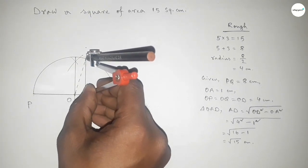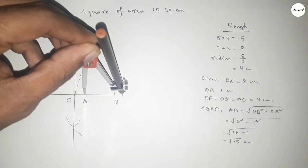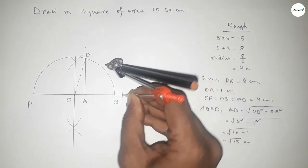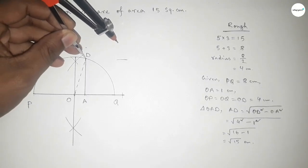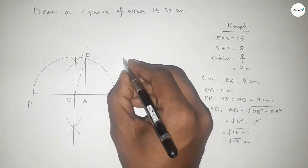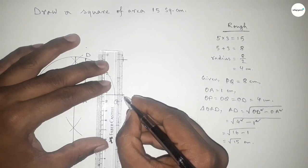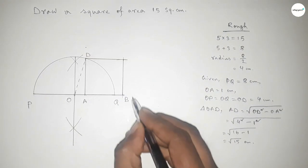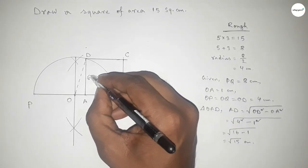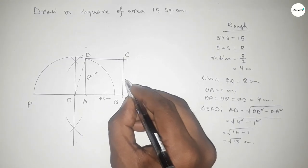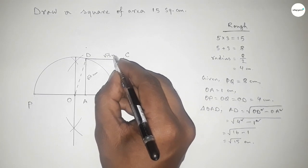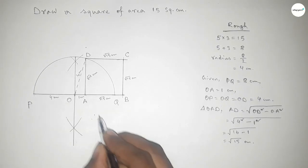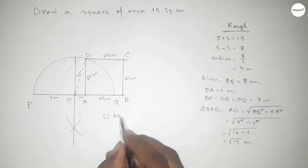Now taking the length AD by compass and drawing an arc. Extending the line PQ up to this point, then with the same length drawing arcs and putting the compass here and cutting here, so both curves intersect at a point. Joining this side and this side — taking these as points B and C. So this side is root 15, this side root 15, this side root 15, and this side also root 15 centimeters, with OA equal to 1 centimeter, and OP and OQ equal to 4 centimeters each.